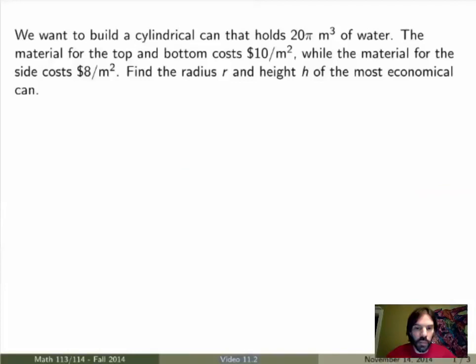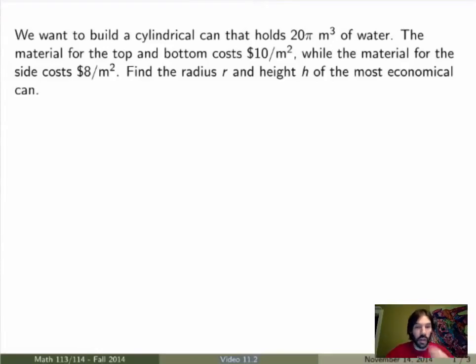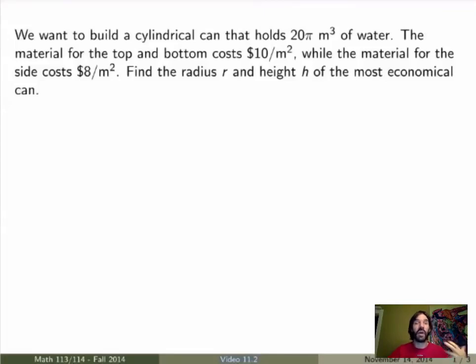What we'll do now is just work through an example step by step, and then I'll summarize the strategy and we'll do many more examples in class next week. Here's my example: suppose that we want to build a cylindrical can that holds exactly 20π meters cubed of water, so the volume is fixed. The material for the top and bottom of the can costs $10 per meter squared, while the material for the side costs $8 per meter squared. We want to find the radius r and height h such that the cost is minimized.